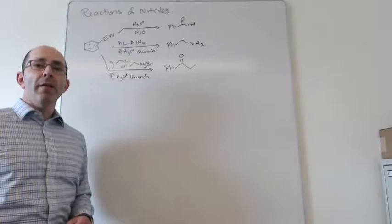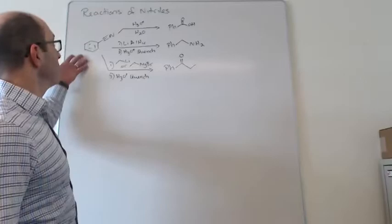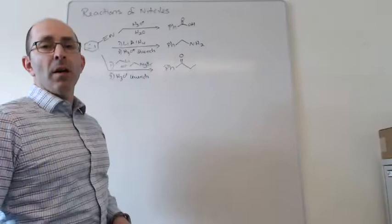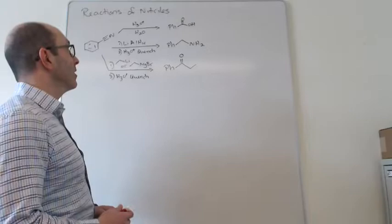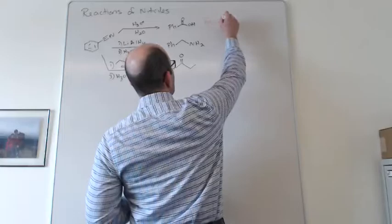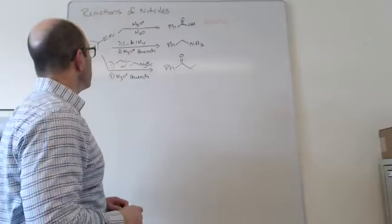A nitrile, as a reminder, is a C triple bond N — sometimes referred to as a cyanide. Depending on the reaction conditions we use, these molecules will enable us to make a carboxylic acid, and this is one we haven't seen yet — it will come up when we do reactions of carboxylic acid derivatives. So this is a preview of a reaction we will see in the future.